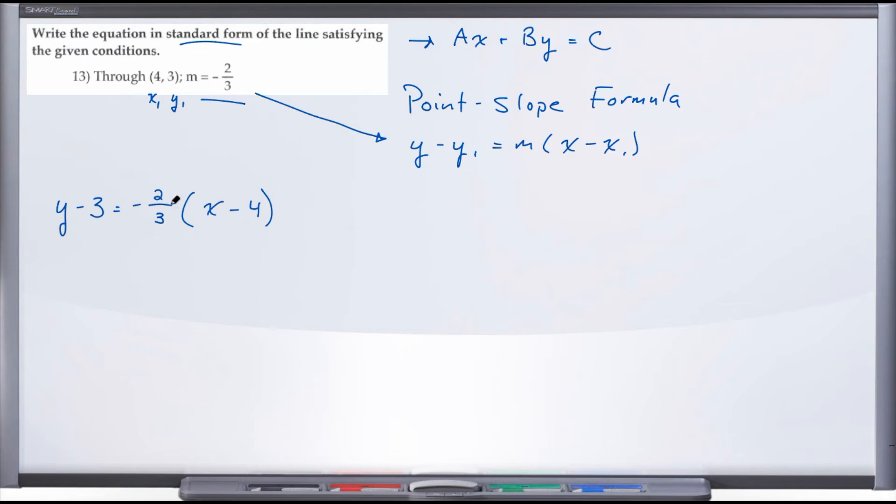Now from here we have two options. We can either right away distribute this slope through our set of parentheses, or what we can do is clear the fraction and end up working with an equation that doesn't have a fraction in it. Generally speaking, that's what I like to do. The way that we clear our fraction is we're going to multiply this entire equation by the common denominator. In this case, our common denominator is 3. So let's go ahead and multiply this whole equation by 3. Really, what we're saying is take each term in the equation and multiply it by 3.